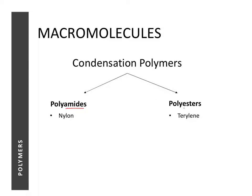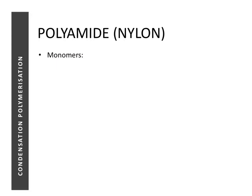You are required to know an example for each. In the syllabus, nylon is an example of a polyamide, and terylene is an example of a polyester. We're going to look at how polyamides are formed first, and then later how polyesters are formed. Bear in mind that a polyamide is a condensation polymer, so you need two different monomers, each with a functional group at each end.